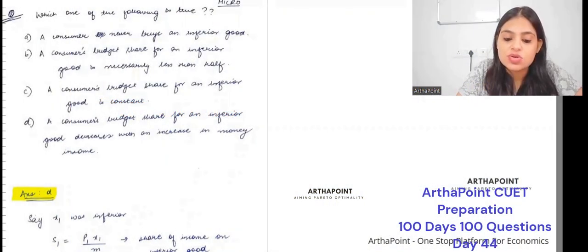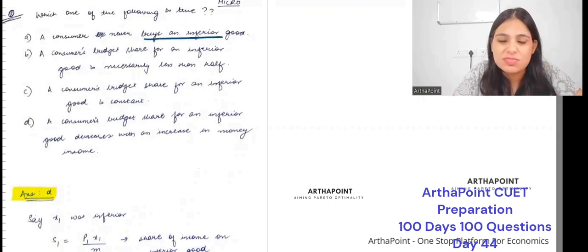The following is true: a consumer never buys an inferior good. That's not possible. You can buy an inferior good, so this is false.